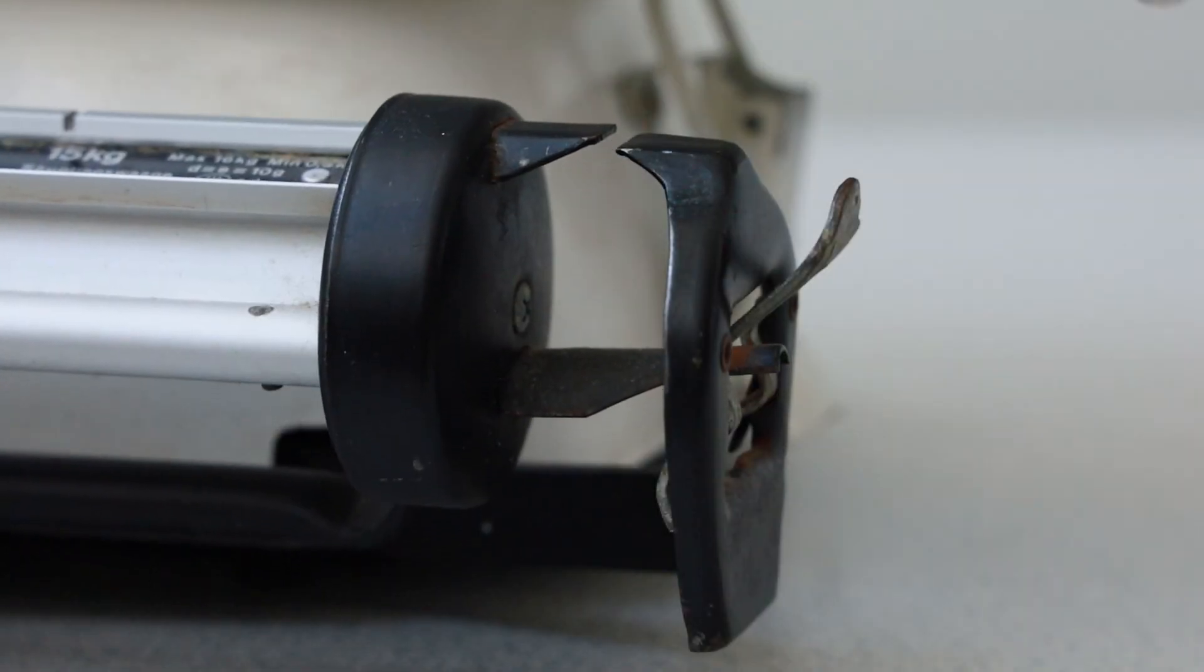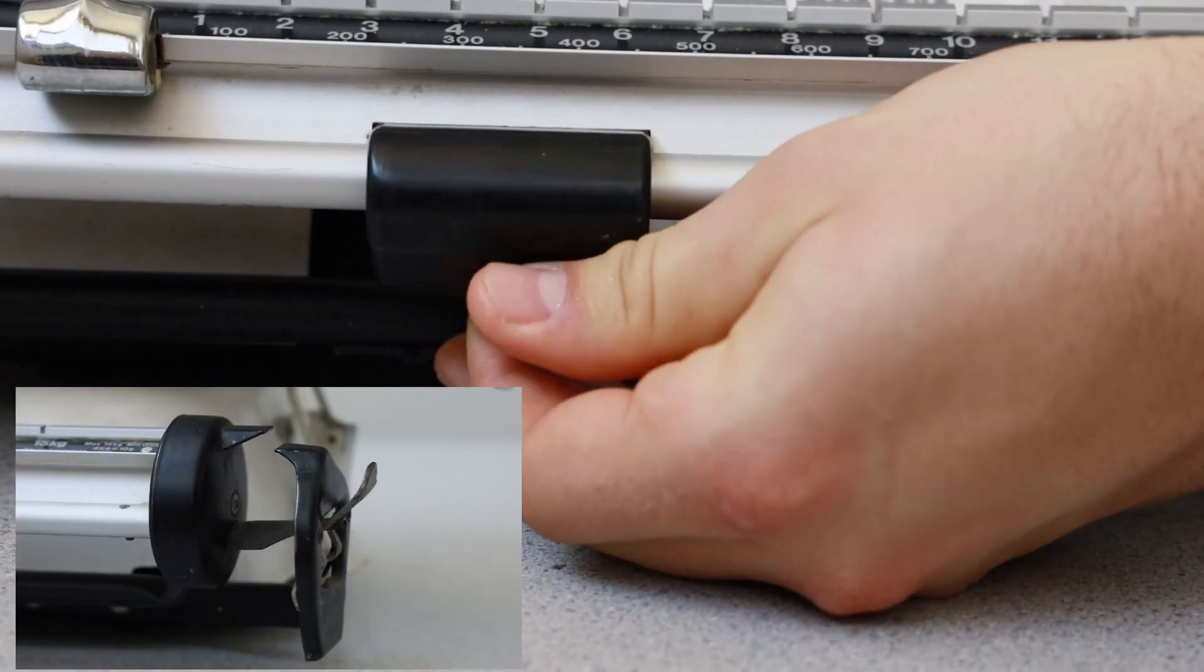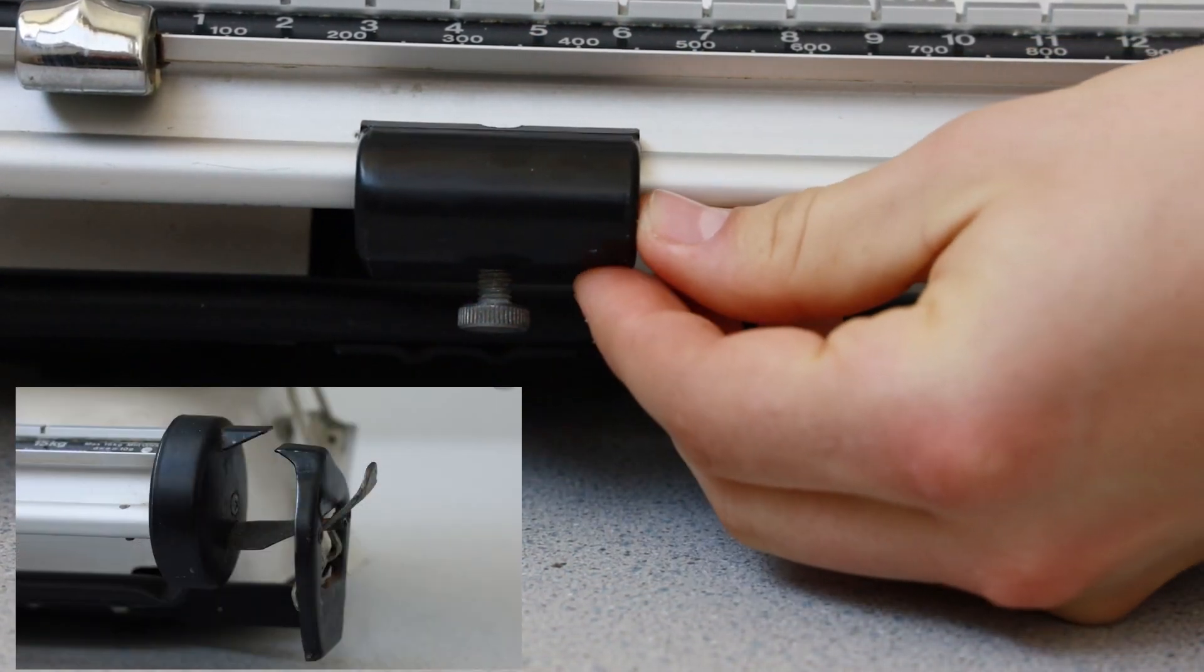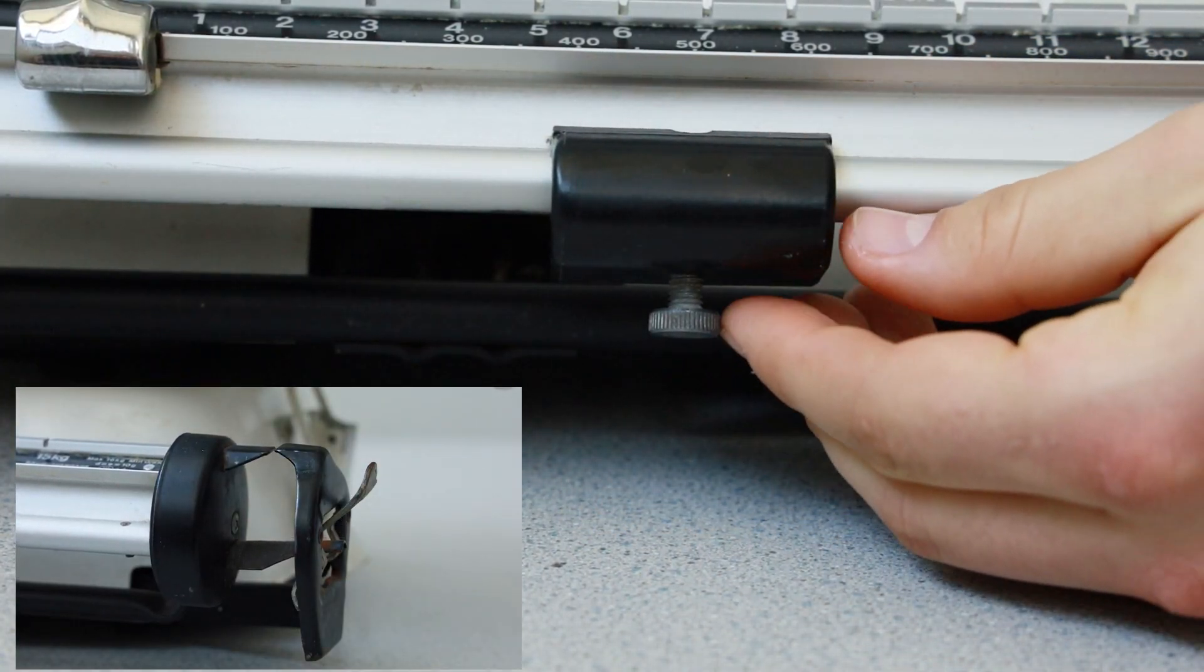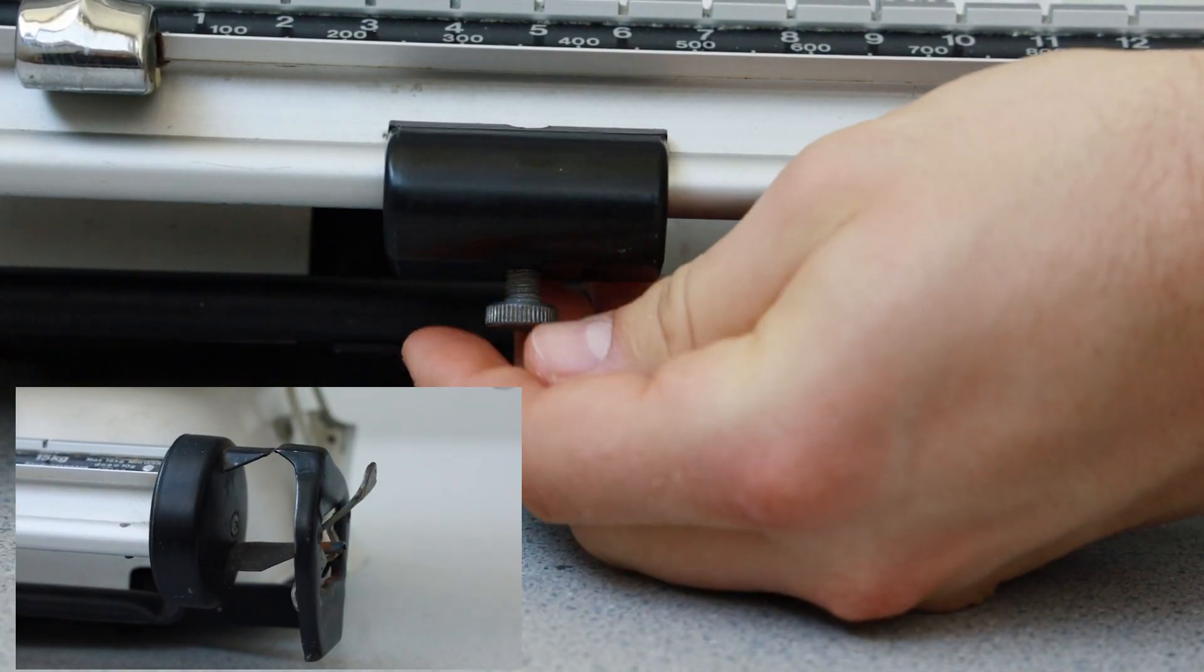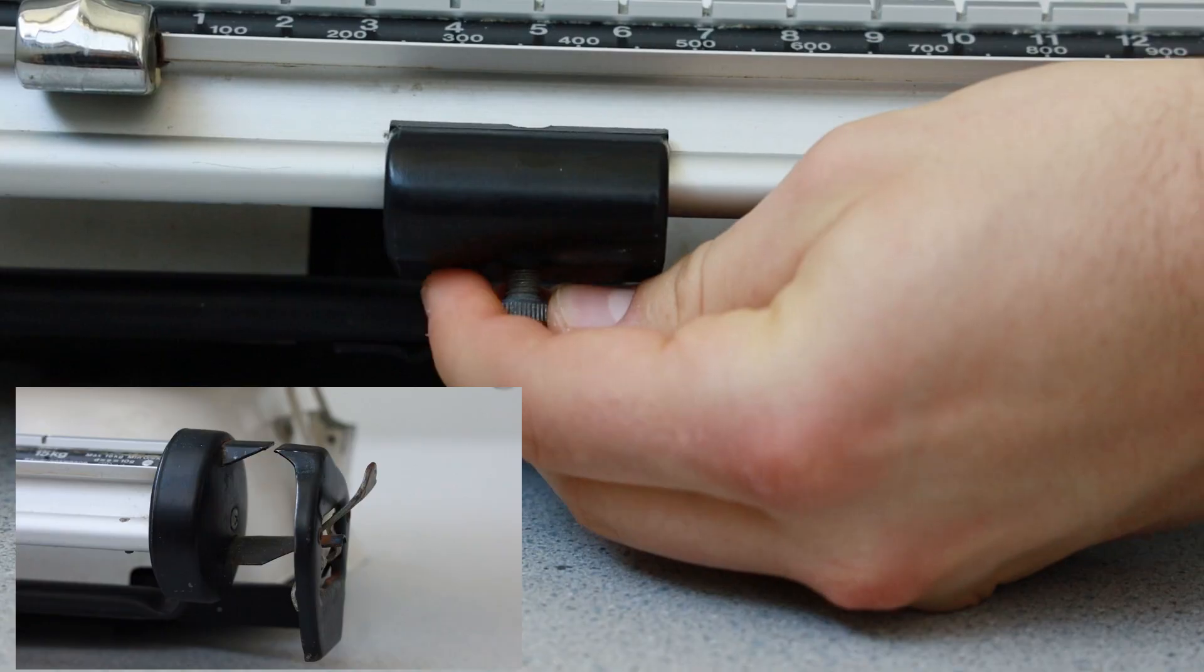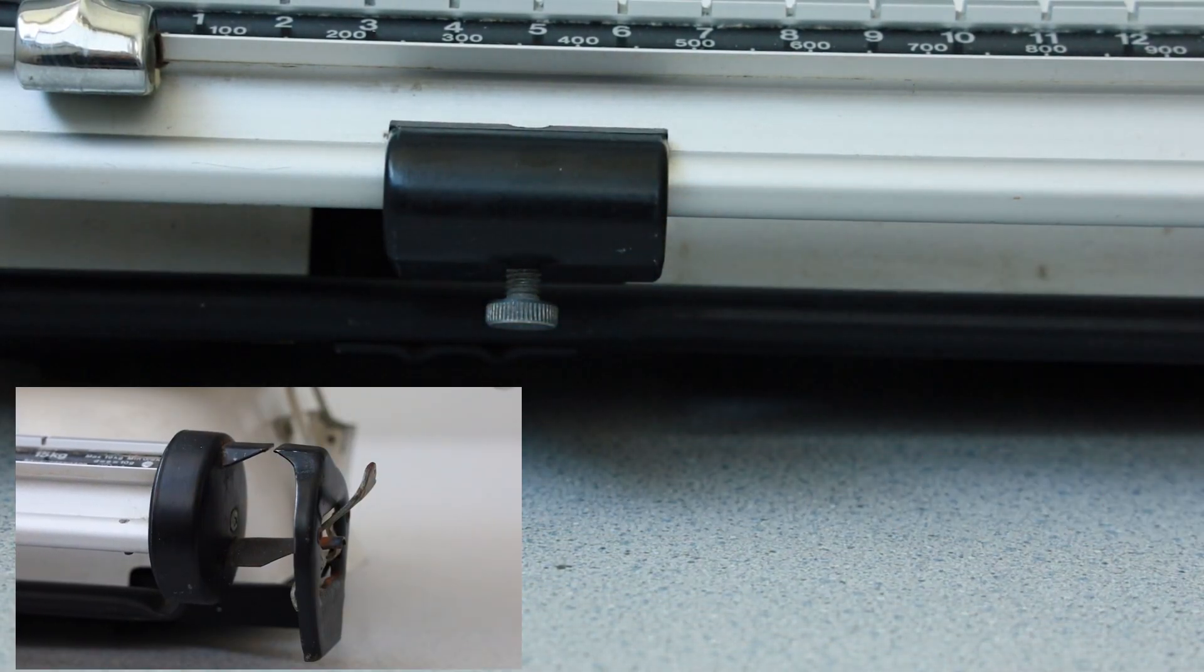If the balance beam is not level without any weight present in the basket, move the tear weight by unscrewing it and sliding it back and forth until the beam balance is level. When the beam balance is level, indicated by the pointer and counter pointer being aligned, screw the tear weight back into place so it does not move. The scale is now calibrated and can be used for weighing.